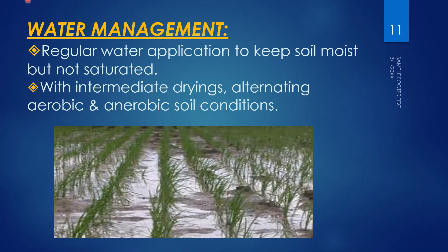The next cultivation practice is water management. Apply water regularly to keep the soil moist but not saturated — it does not require 2 to 5 cm of standing water. Maintain intermediate dryings and alternating aerobic and anaerobic soil conditions. Aerobic refers to free oxygen in the aquatic environment; anaerobic refers to the lack of free oxygen.